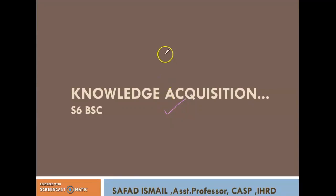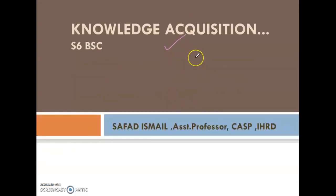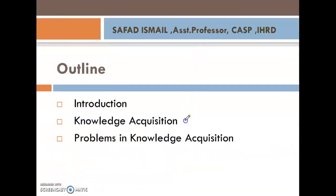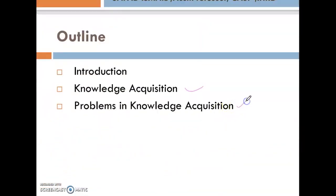This is our first module. We will cover: what is knowledge, what are the different types of knowledge in Artificial Intelligence, how different knowledge are represented, how to acquire knowledge, and what are the problems in knowledge acquisition.